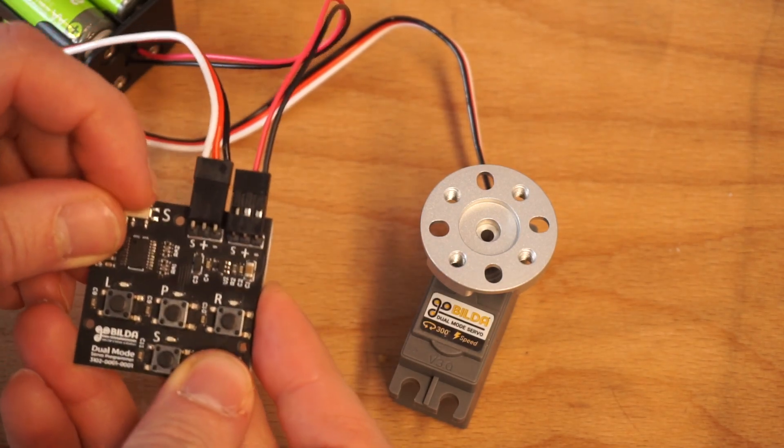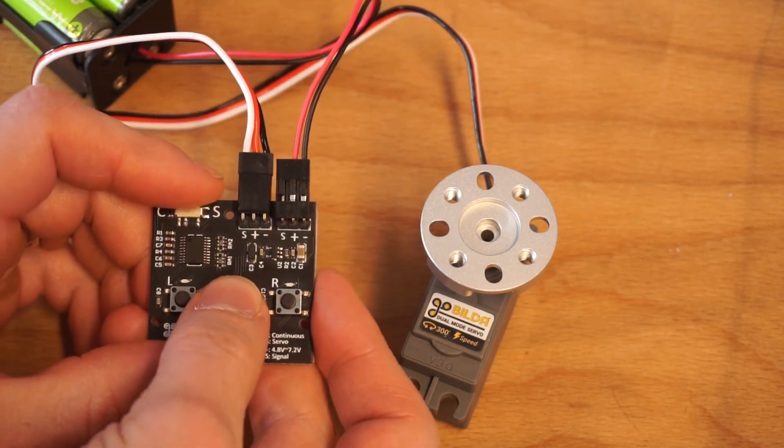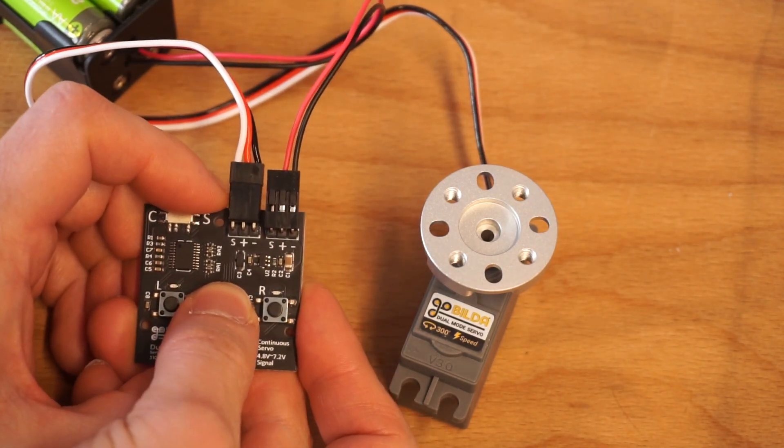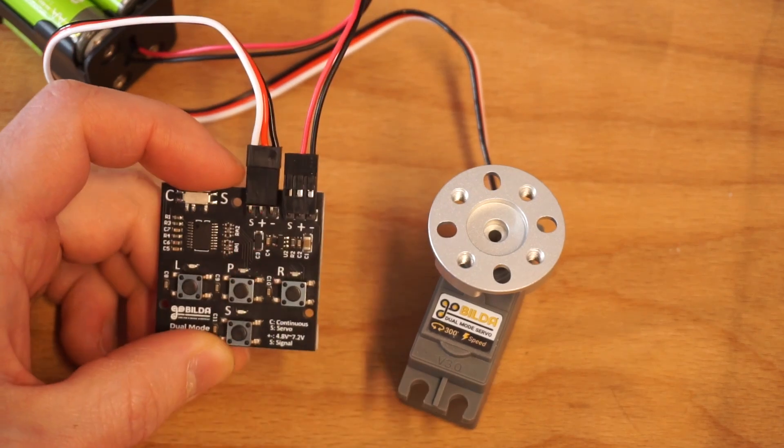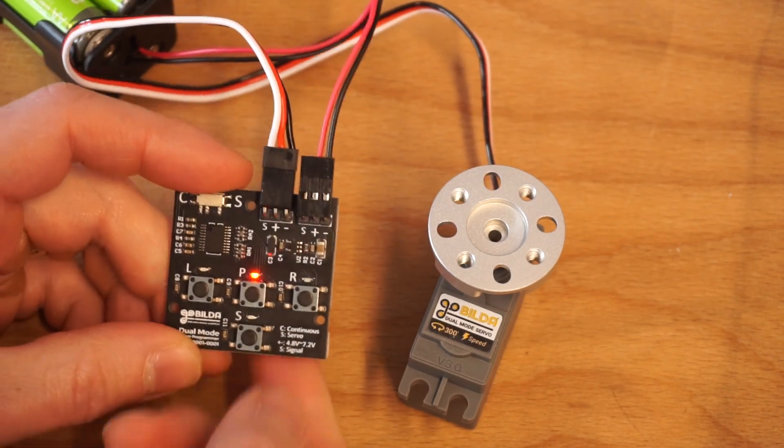Let's go ahead and put this into standard servo mode now. So I'm going to flick the little switch, push and hold P for another five seconds. Then you notice I get three flashes. That lets me know I'm in servo mode now.